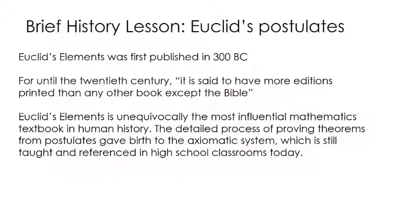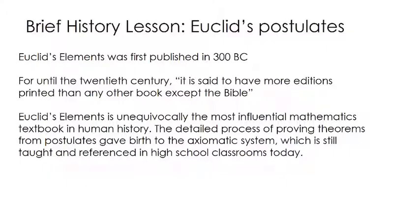To give you a quick history lesson on how this came about: Euclid published a book called Euclid's Elements in 300 BC, and this book was wildly influential. Until the 20th century, it is said to have had more editions printed than any other book except the Bible, and it's unequivocally the most influential math textbook ever written. You are still using the process he coined — starting with a set of postulates and then proving theorems from them — which is called the axiomatic system.